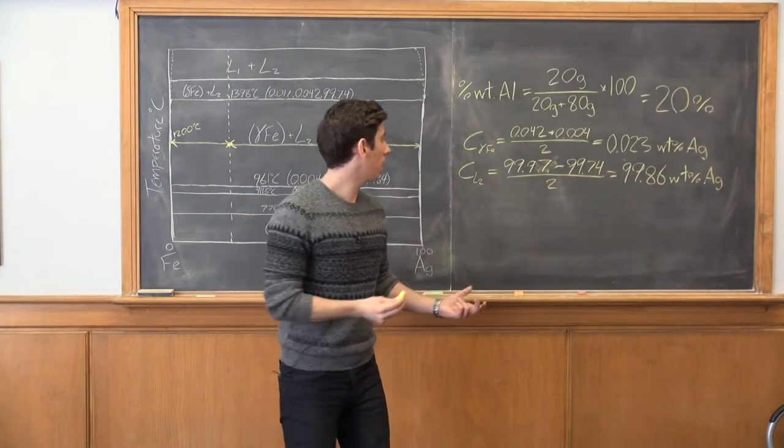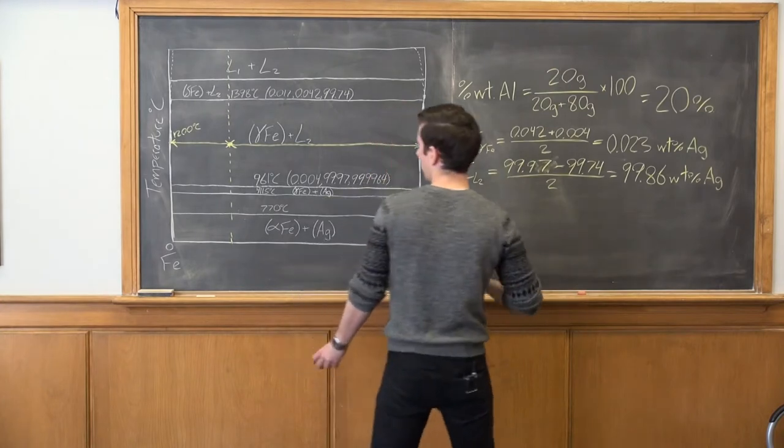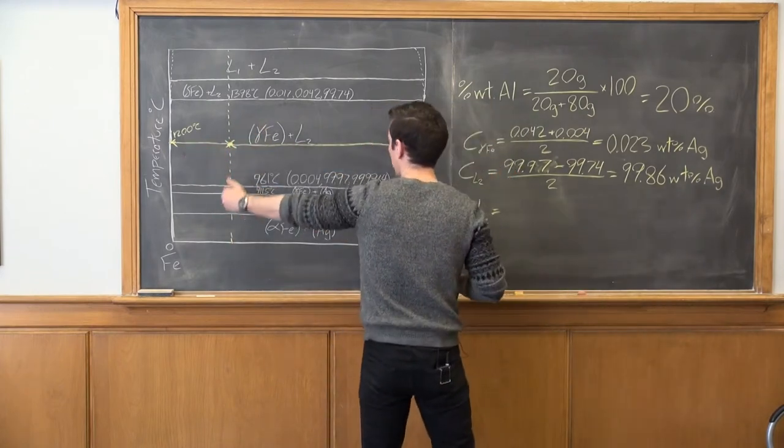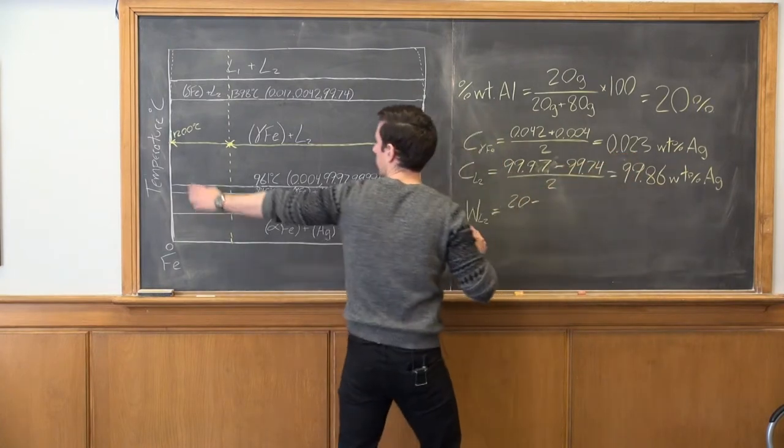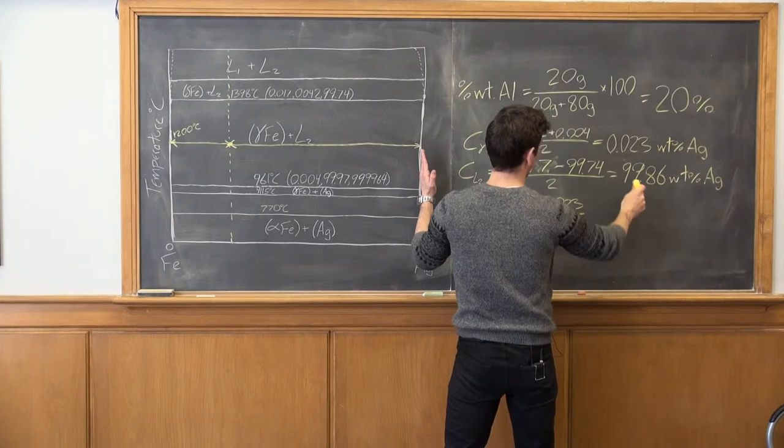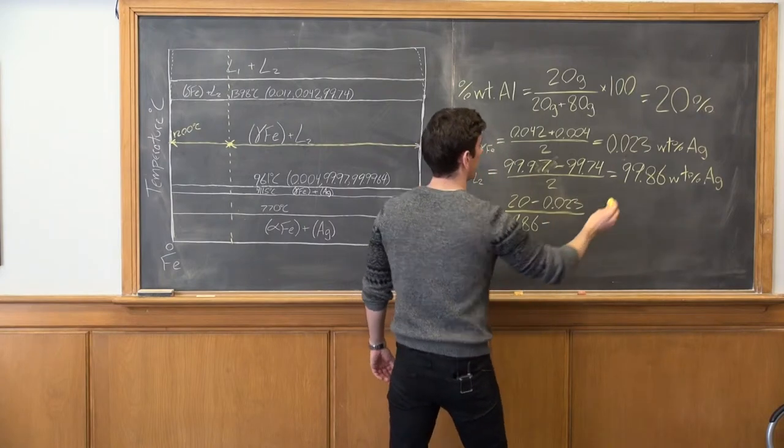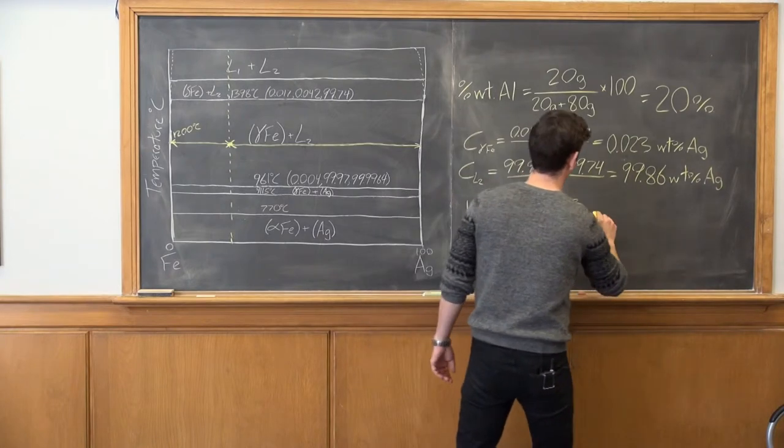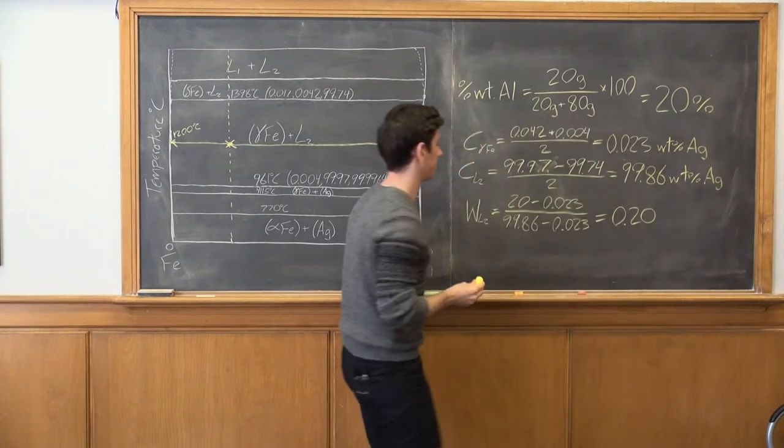So now we have enough information to apply the lever rule and determine what weight fraction of the liquid we have. So when we apply the lever rule, we take this side, this part, and divide it by the entire. So this part is going to be 20 minus 0.023 divided by 99.86 minus 0.023 again, and this is going to give us 0.2.